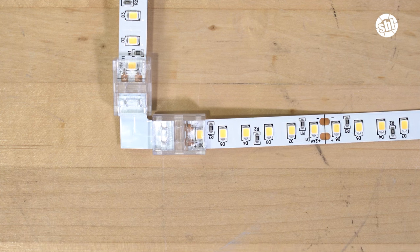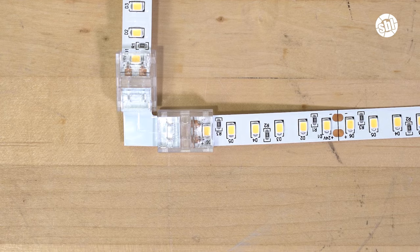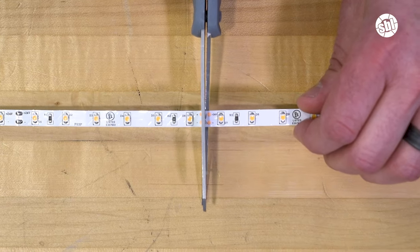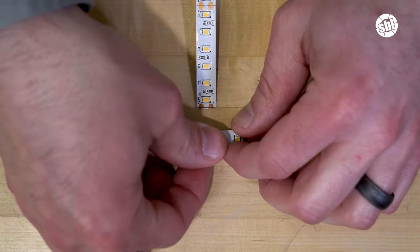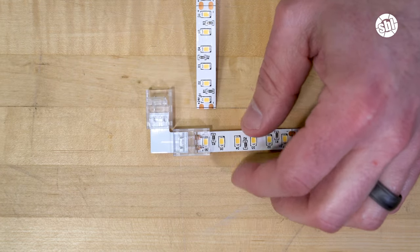The first and our recommended option is to use what's known as an L connector. These are simple and inexpensive solderless connectors that you can order at SuperbriteLEDs.com. The way they work is you cut your LED strip light in two, and then you connect both strips using the connector. Each side snaps into place.